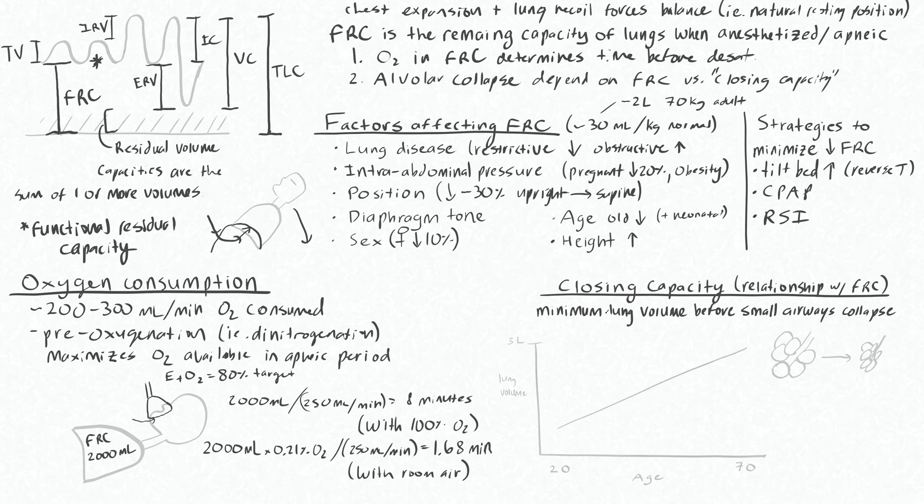Remember that closing capacity is the minimum lung volume required before small airways start to collapse. At some lower lung volume, you'll see the collapse of these small airways like your alveolar ducts and respiratory bronchioles.